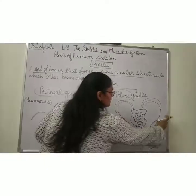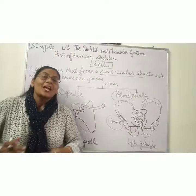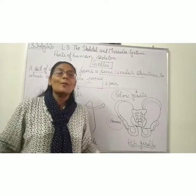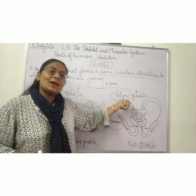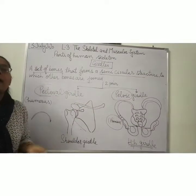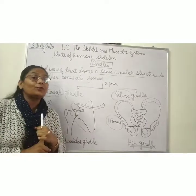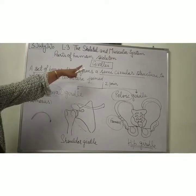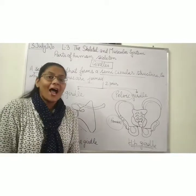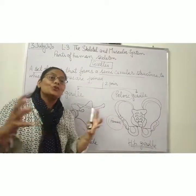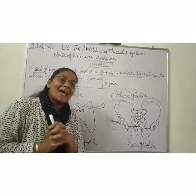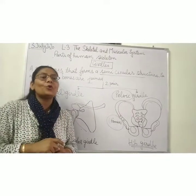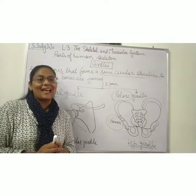Both femurs are attached to the pelvic girdle. Importantly, this pelvic girdle bears the weight of our whole body. So all the parts of the skeletal system — skull, backbone, rib cage, girdles, fore limbs, and hind limbs — are attached together, forming the skeletal system. In the next session, I will take you to the science lab to show you all the bones of the human skeleton. Thank you.